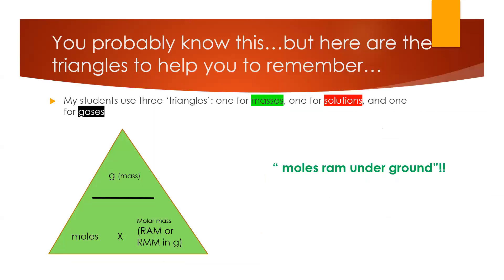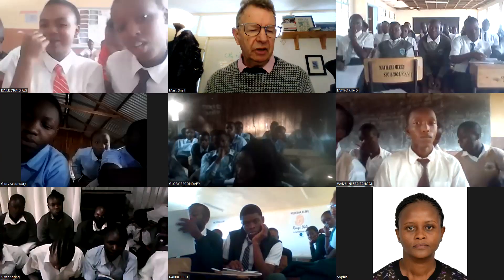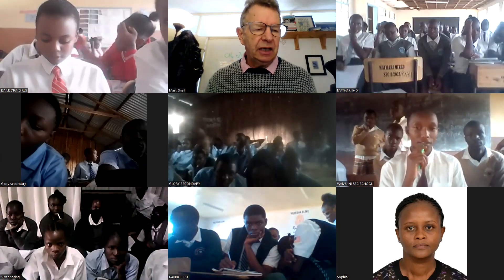For solids we use mass; for solutions we need volume and concentration; and for gases we measure volume, normally using something like a gas syringe. So the three cases are: solids — mass; solutions — volume and concentration; gases — volume.